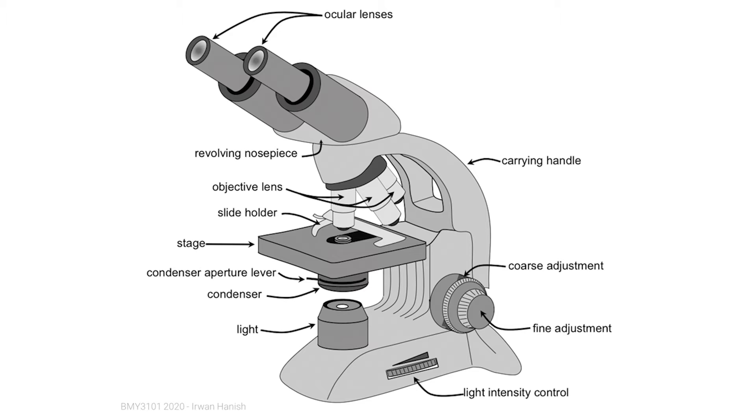The stage is above the condenser. In the middle of it is an opening, so light from the condenser goes through there. You put your specimen slide on this stage, and you use the slide holder to keep it in position. So the light goes up from the illuminator to the condenser to the stage where your specimen is.